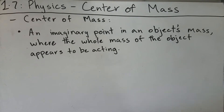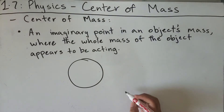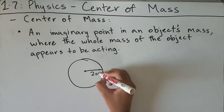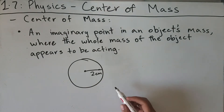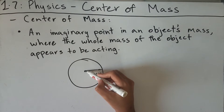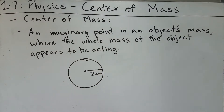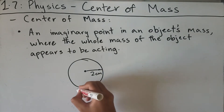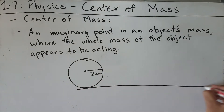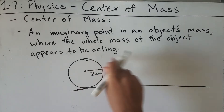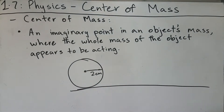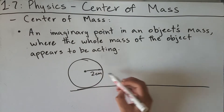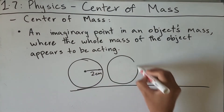Let's say the object we're talking about is a sphere with a radius of 2 centimeters. From intuition, the center of mass of the sphere would be at the center of the sphere. If we roll this sphere on some surface, every time the ball spins around its circumference, the center of mass stays at that point all along the line.